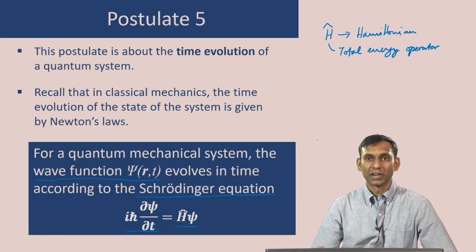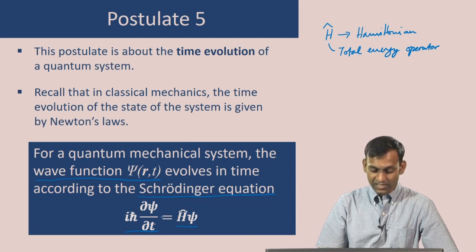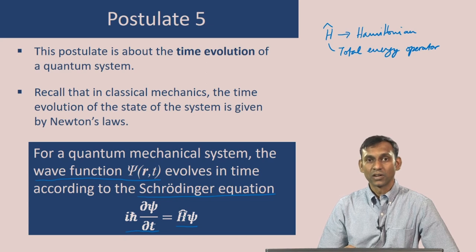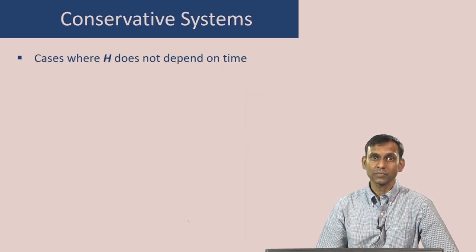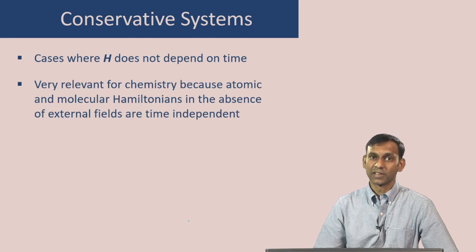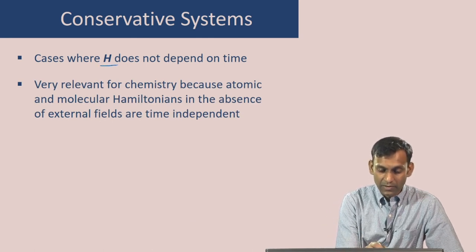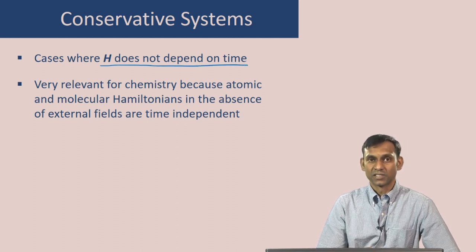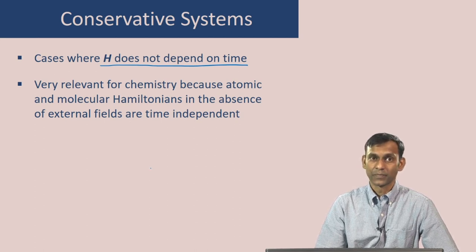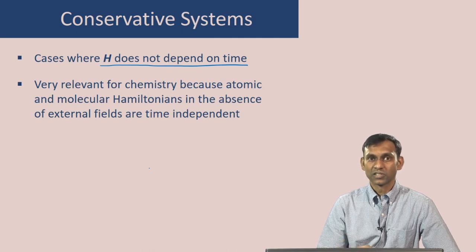We can see that the Hamiltonian operator is particularly important for quantum mechanics. It tells us how the wave function evolves in time. The left-hand side of this equation is the first derivative with respect to time, and the right-hand side is the Hamiltonian operating on the wave function. Let us consider a special case that is particularly important in the study of chemistry: when the Hamiltonian does not depend on time. These systems are called conservative systems, because in this case the average energy of the system does not change with time. Let us see how the wave function evolves in time for such systems.